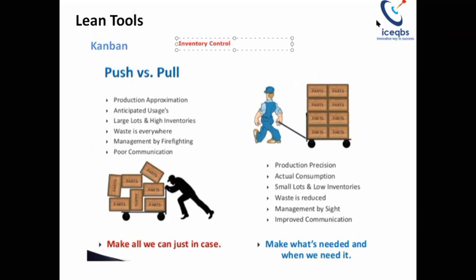When I was explaining the lean concepts to you, I told you that until there is a trigger from the customer, you should not start working on producing the product or service. Don't produce anything against anticipated demand. There are two types of approach we can take: either a push type of approach or a pull type. Push type is when there is no request from the customer but you have the capacity in terms of machine time or manpower.